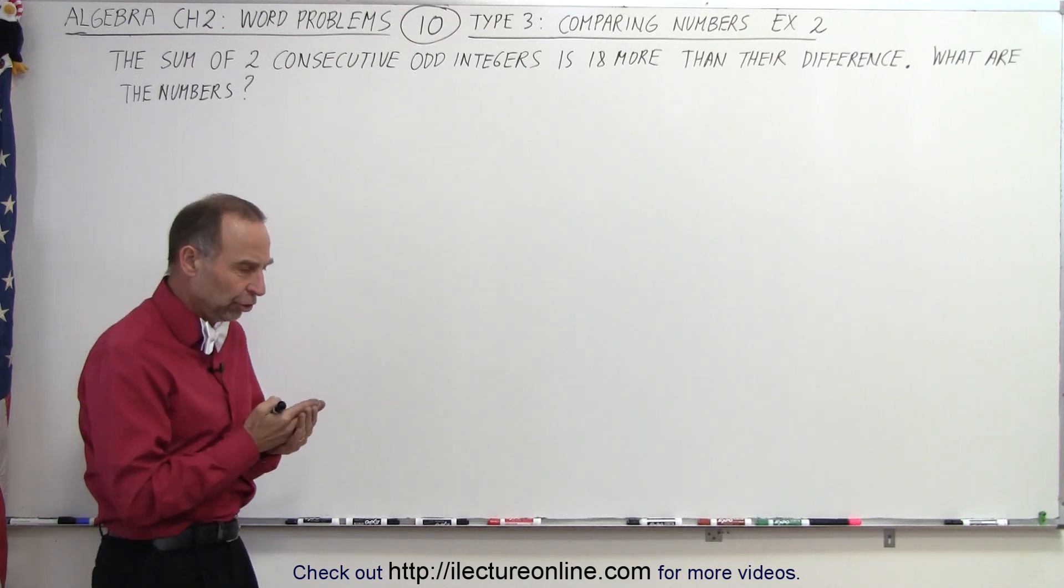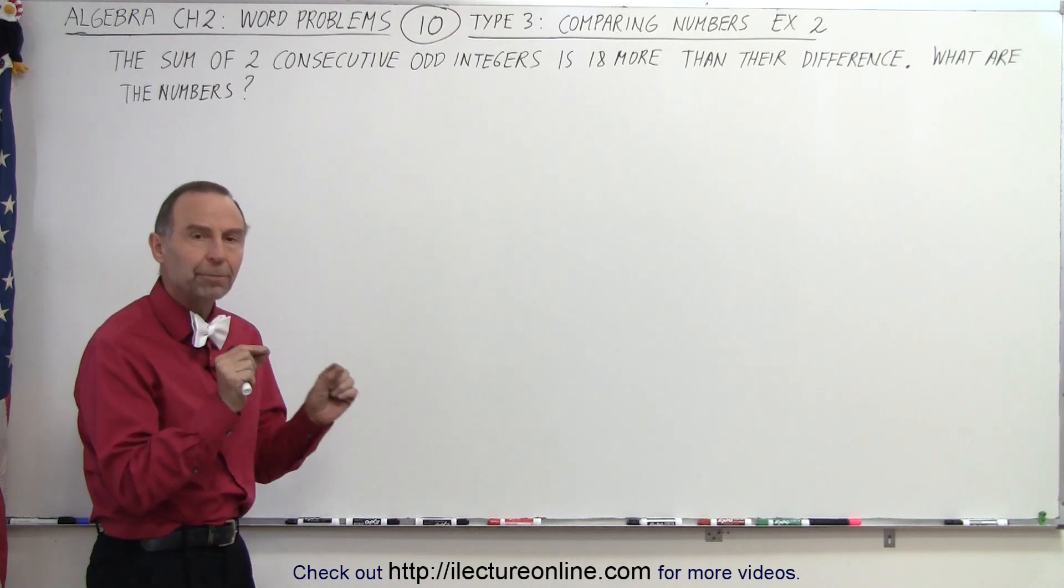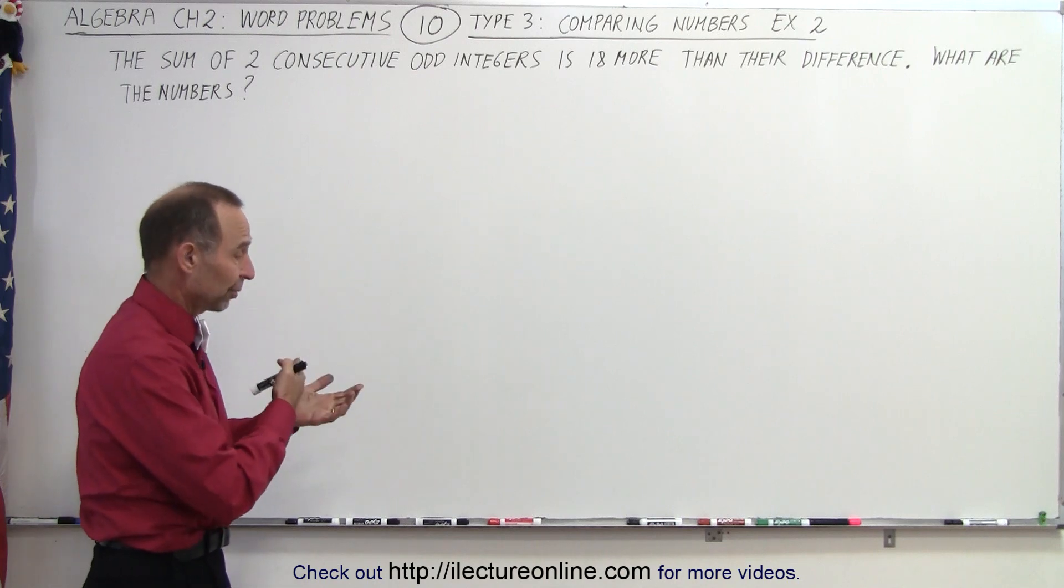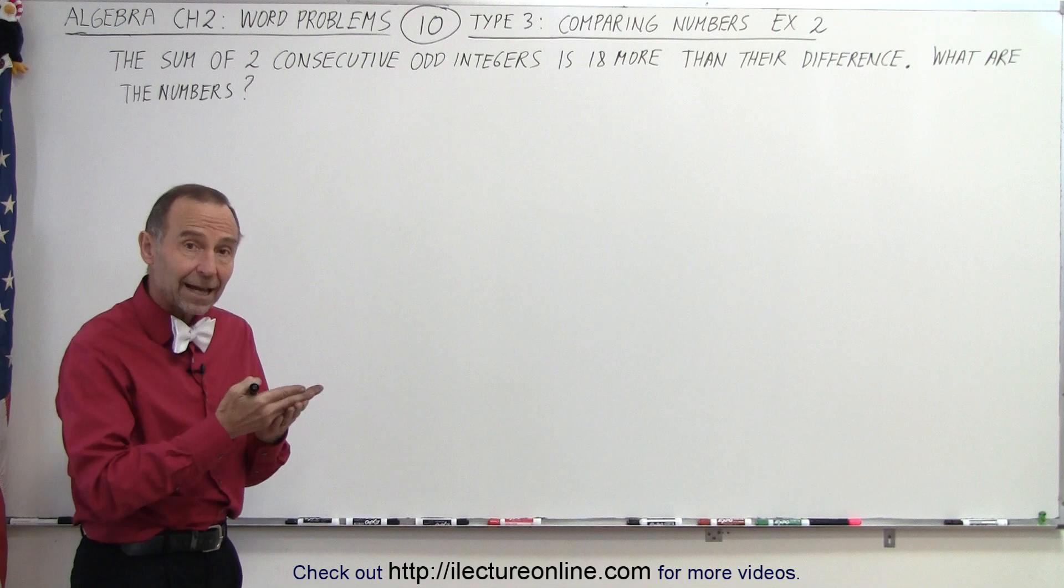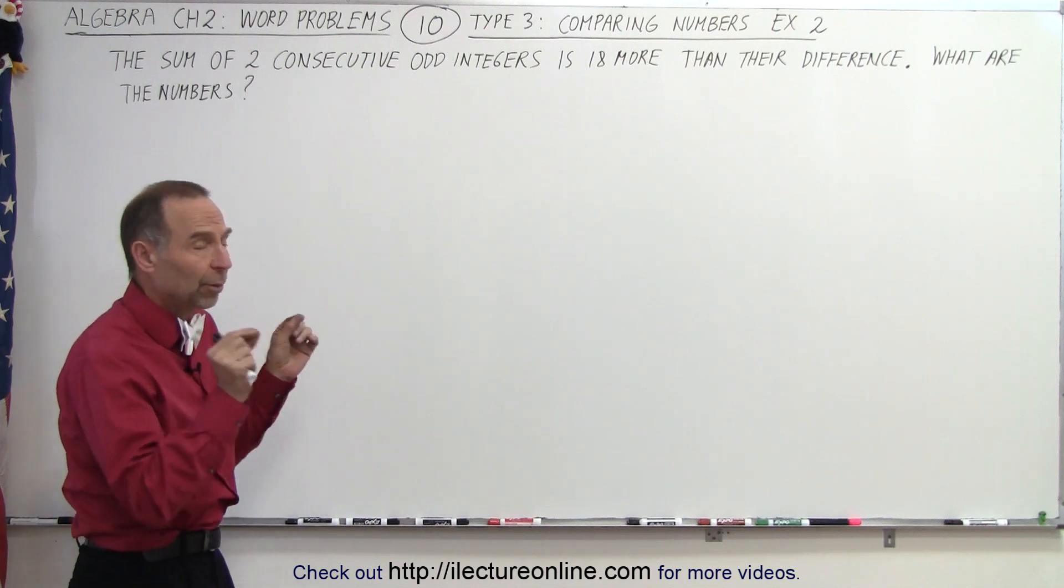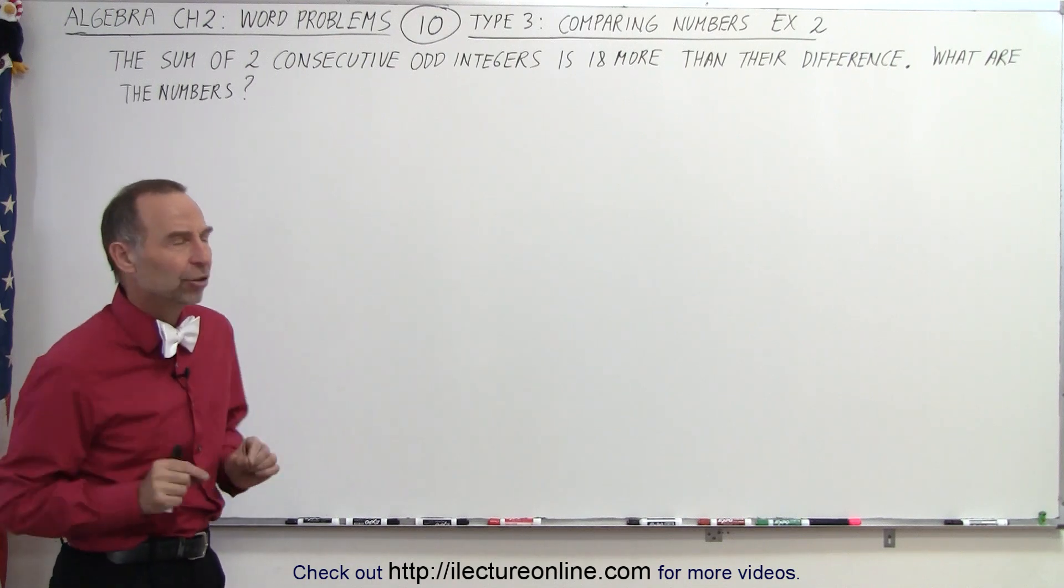If they're consecutive odd integers, that means they must be apart by 2. In other words, if the first one is 3, the next one must be 5. Or 5 and 7, or 7 and 9, or 9 and 11, 11 and 13, and so forth. So that's what we mean by consecutive odd integers.